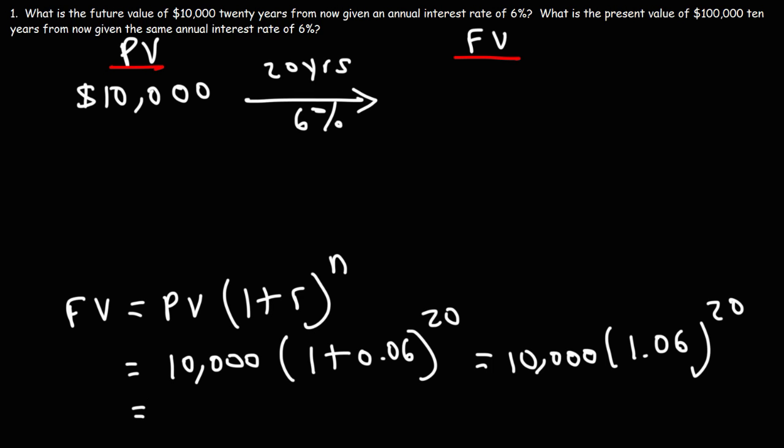Now, let me go ahead and plug this in. So the future value of $10,000 20 years from now, I'm going to write it here, is $32,071.35.